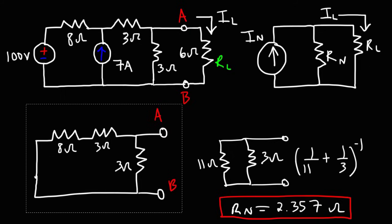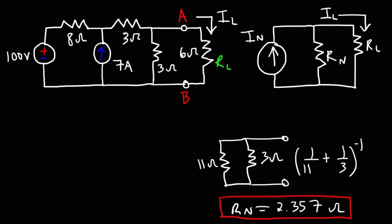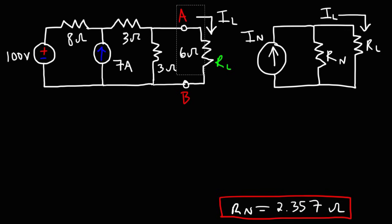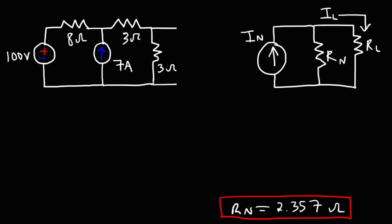Now we need to calculate the Norton current. To do that, I'm going to disconnect the load resistor — keep in mind RL is equal to 6, we'll get back to it later. So right now we have an open terminal across the 3-ohm resistor. We're going to call this point B, point A, and point C. Now we need to perform a nodal analysis at point C using Kirchhoff's current law.